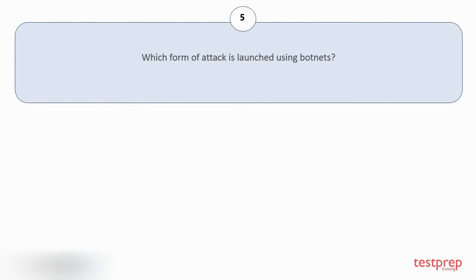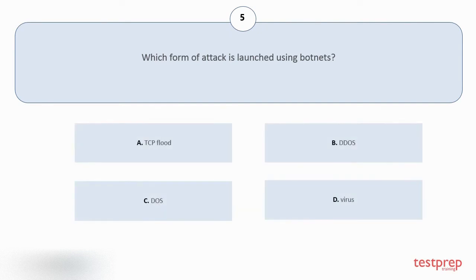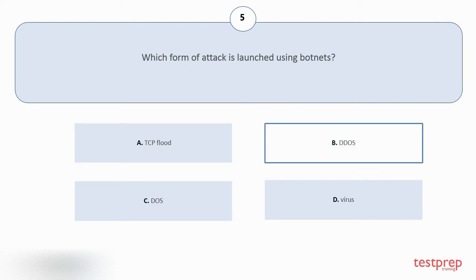Question number 5. Which form of attack is launched using botnets? Your options are: A. TCP Flood. B. DDoS. C. DoS. D. OSD Virus. The correct answer is option B.